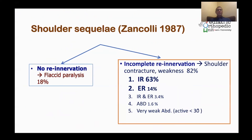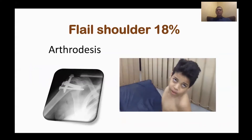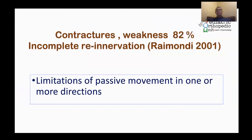Types of shoulder sequelae: if there is no innervation there will be flaccid paralysis. If there is incomplete innervation there will be internal rotation contracture, external rotation contracture, combined contracture, abduction contracture, or very weak abduction. The best treatment for a flail shoulder is arthrodesis, which gives good function by transforming upper limb movement to scapulothoracic movement. Partial innervation with contracture and weakness produces the different types of contracture.